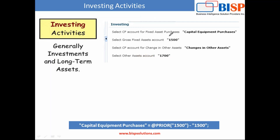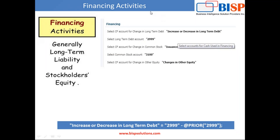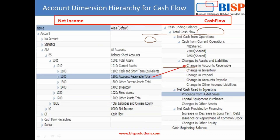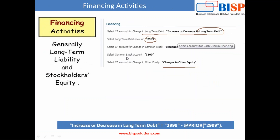For investing activities, the fixed asset account — previous period minus current period — gives you the change in equipment purchase. The difference between previous and current period for other assets is stored under change in other assets. For financial activities, the difference between the long-term debt account for the previous period and current period is stored under increase or decrease in long-term debt. Change in other equity is the difference between two consecutive periods of equity, and issuance or repurchase of common stock is stored under the common stock account.